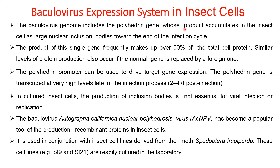In the baculovirus expression system in insect cells, the baculovirus genome includes the polyhedrin gene, whose product accumulates in the insect cell as large nuclear inclusion bodies towards the end of the infection cycle. This single gene's product frequently makes up over 50% of the total cell protein. A similar level of protein production occurs if the normal gene is replaced by a foreign one. The polyhedrin promoter can be used to drive target gene expression, and the polyhedrin gene is transcribed at very high levels late in the infection process — two to four days post infection.